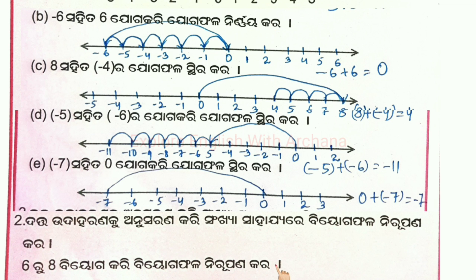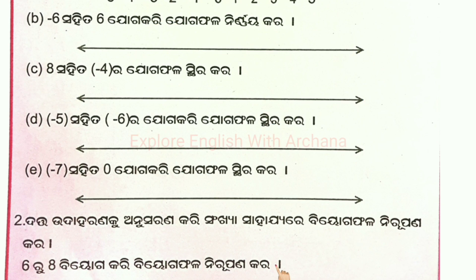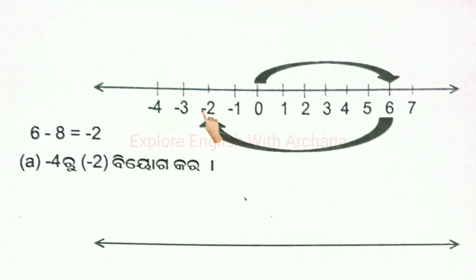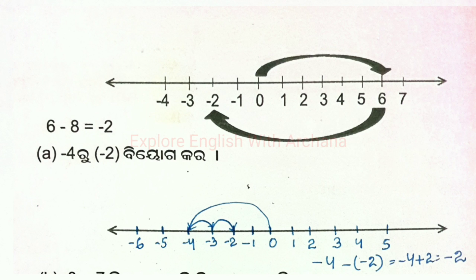Now let us look at subtraction on the number line. 6 minus 8 — starting at 6 and moving 8 steps left: 1, 2, 3, 4, 5, 6, 7, 8 — that gives us minus 2. So 6 minus 8 equals minus 2. Now, minus 4 minus 2 — what does that become?